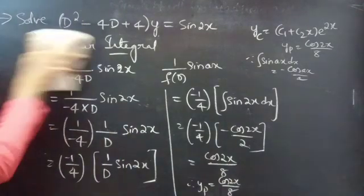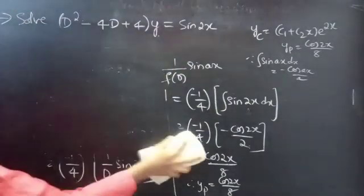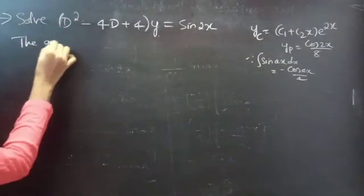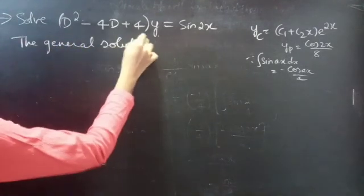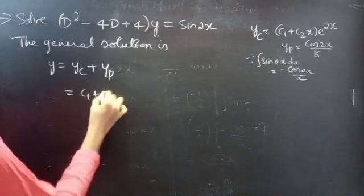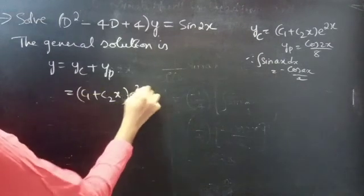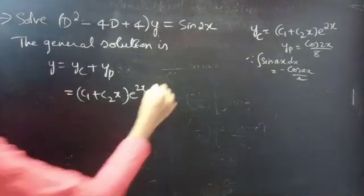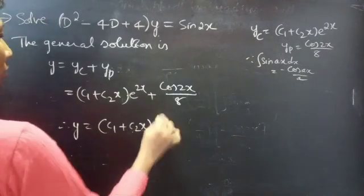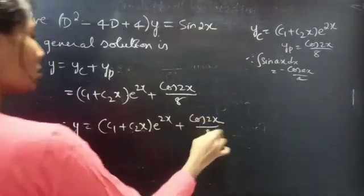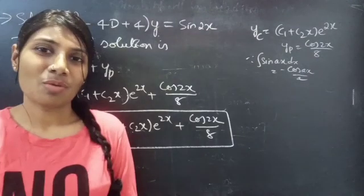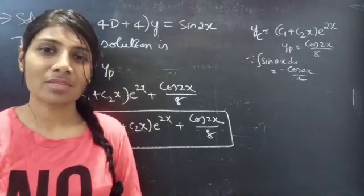Now we can write the general solution. The general solution is y = yc + yp. We have yc = (c1 + c2x)·e^(2x) and yp = cos 2x/8. Therefore, y = (c1 + c2x)·e^(2x) + cos 2x/8 is the required solution. We have seen a problem from higher order linear differential equations in this video. Hope you understand. We'll see you in the next video. Bye-bye.